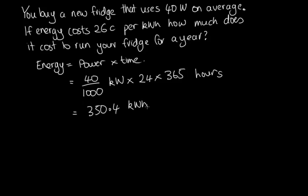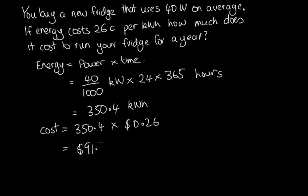So 350.4 kilowatt hours is the energy used by the fridge in a year. To get the cost, we multiply the amount of energy by the cost per kilowatt hour: 350.4 times 26 cents. Solving that on the calculator, we end up with $91.10 per year. So that's how much it costs to run a fairly normal type refrigerator.